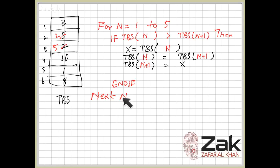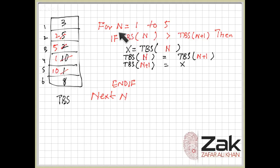Then n becomes 3 — comparing 5 and 10: 5 is not greater than 10, so no swap. Next, n becomes 4 — comparing 10 and 1: 10 is greater than 1, so they are swapped. Then n equals 5 — comparing 10 and 8: 10 is greater than 8, so this becomes 8 and that becomes 10. The array is not yet sorted — only the largest value has reached the bottom.